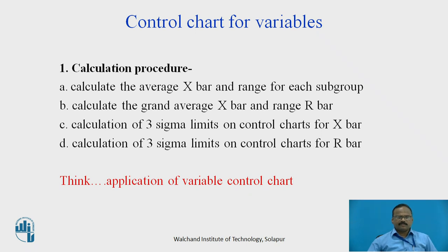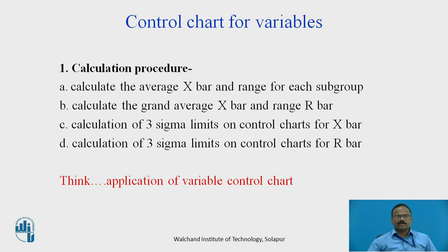Consider the practical application of the variable control chart: if a worker is operating a machine tool, we can measure the dimensions of the products coming out — whether length, diameter, or thickness — and plot a control chart. Whether it is one man on one machine, or one man operating three or more machines, we can plot a control chart to see how the process is behaving.